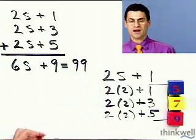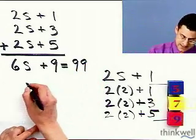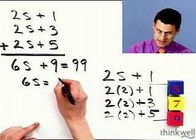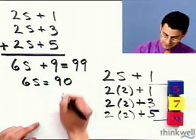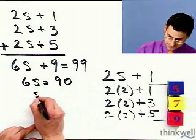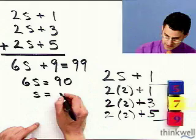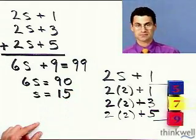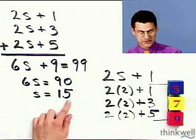Now I want to solve here for S. 6S equals, if I bring this 9 over and subtract, I get 90. And so therefore S would equal 15 if I divide both sides by 6.